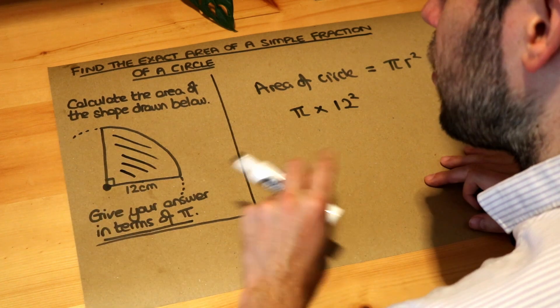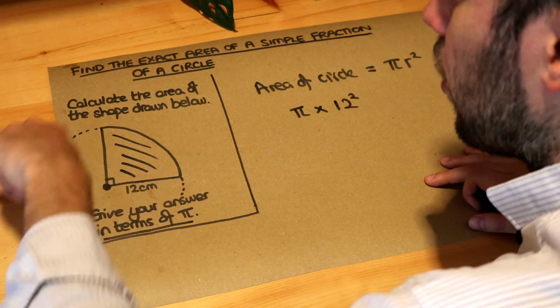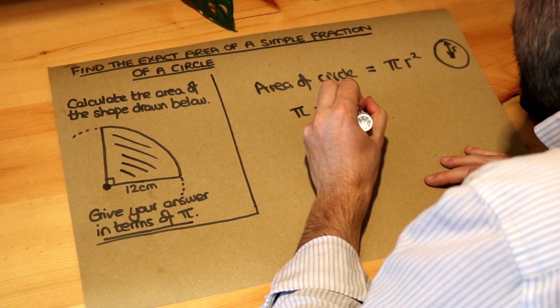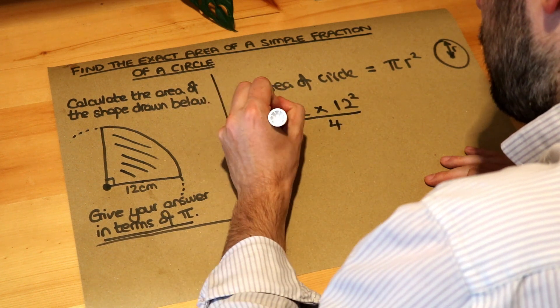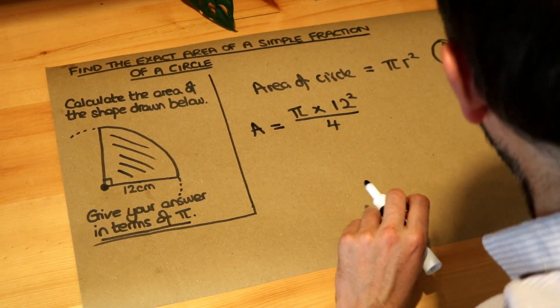But we only want the area of a quarter of that full circle. So we're then going to divide it by 4. So this is the area we want of the quarter circle, A for area.